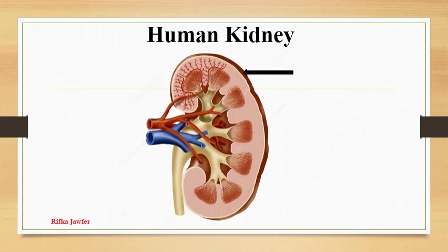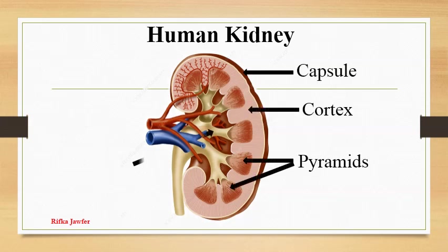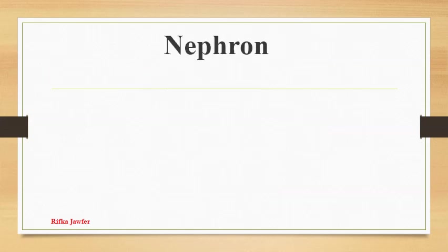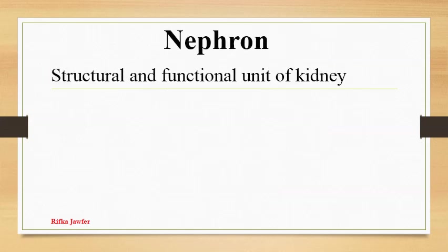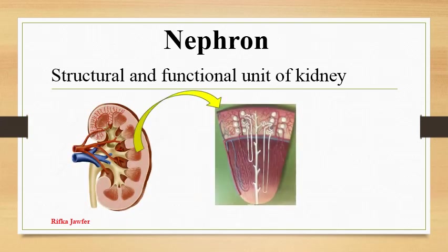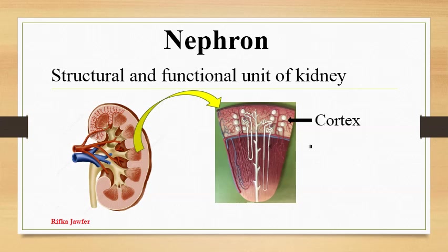The main parts of the kidney are the capsule, cortex, pyramids, pelvis and ureter. The renal artery supplies blood and the renal vein removes blood from the kidney. The nephron is the structural and functional unit of the kidney. There are about 1 million nephrons present in a kidney. The location of the nephrons within the cortex and medulla of the kidney is shown in the diagram.